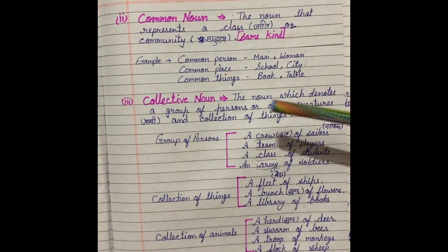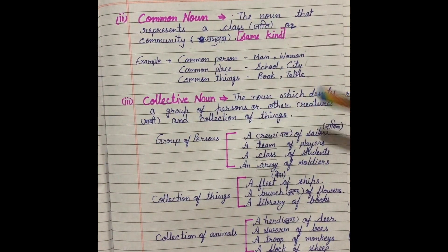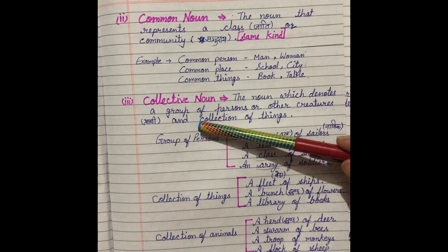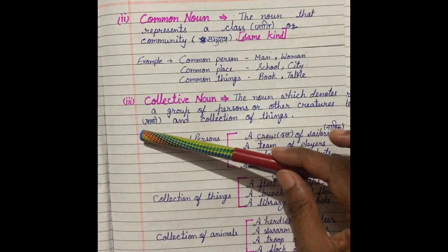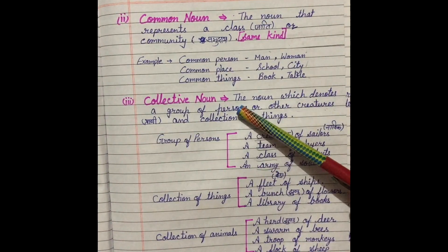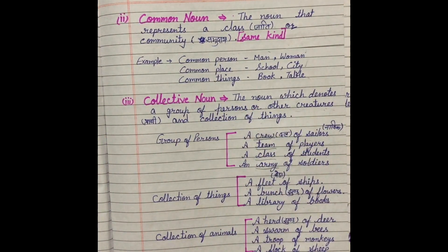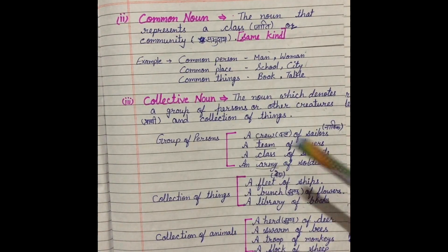Next is collective noun. The noun which denotes a group of persons or other creatures and collection of things. Creatures mean prani. Collective noun denotes persons ke group ko. It means insano ka jo group hota hai, persons ka jo group hota hai, use particular name se bulaya jayega. Jo dusre prani hote hain, animals, birds, unke group ko kisi particular name se bulaya jayega. And collection of things. Inhe kaha jata hai collective noun.